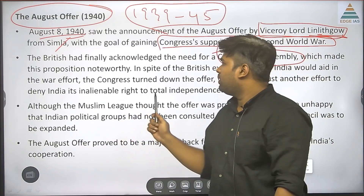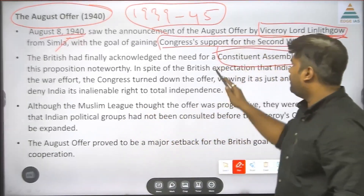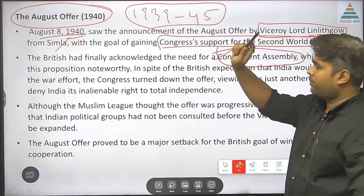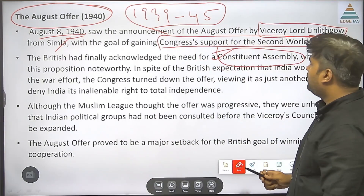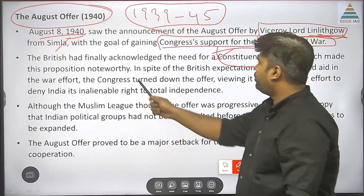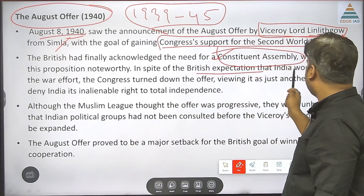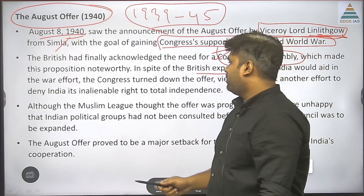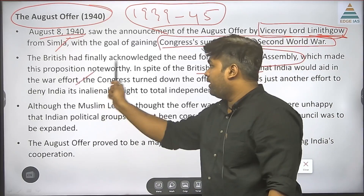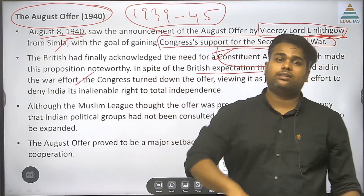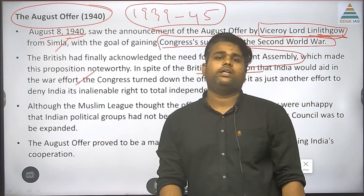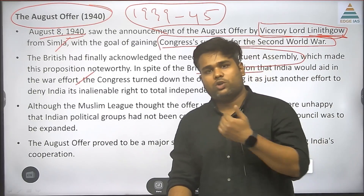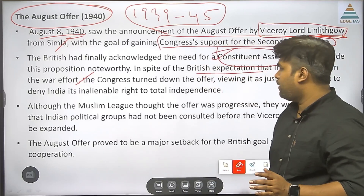August Offer: the need for a Constituent Assembly was recognized by the British. The August Offer made noteworthy propositions in spite of the British expectation that India would aid the war effort. If India supported the British, a Constituent Assembly would be formed by Indians — this offer was given in the August Offer.